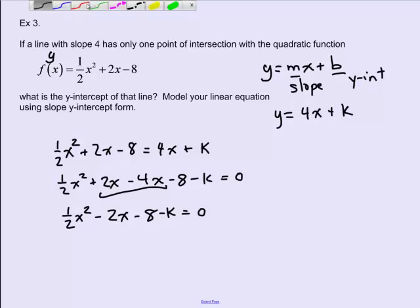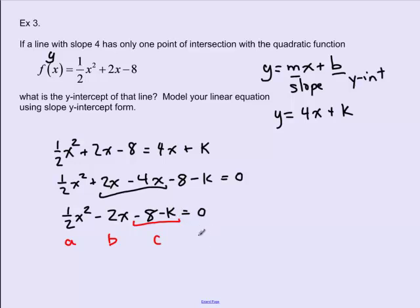Let's identify our a, b, and c values. The coefficient of x squared is one-half — we can write this as 0.5 — so a equals one-half. The coefficient of x is negative 2, so b equals negative 2. And the constant term is negative 8 minus k, so c equals negative 8 minus k. We don't know k yet — we'll have to solve for it.